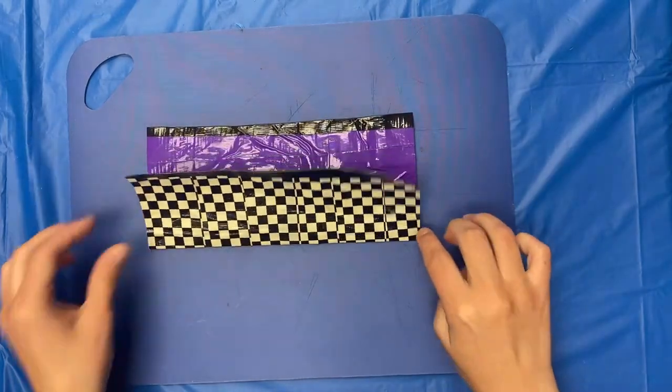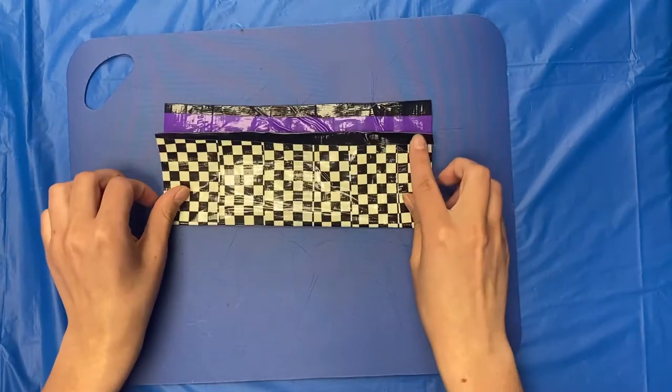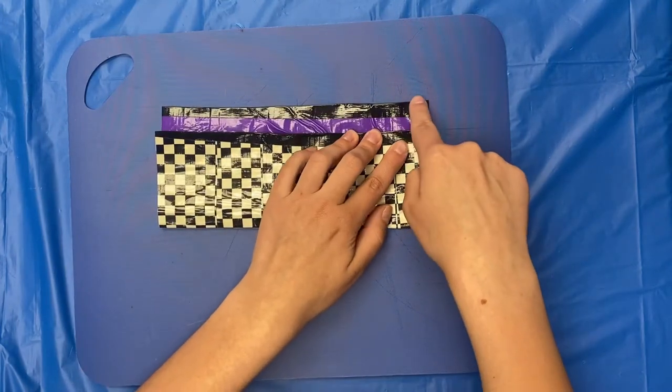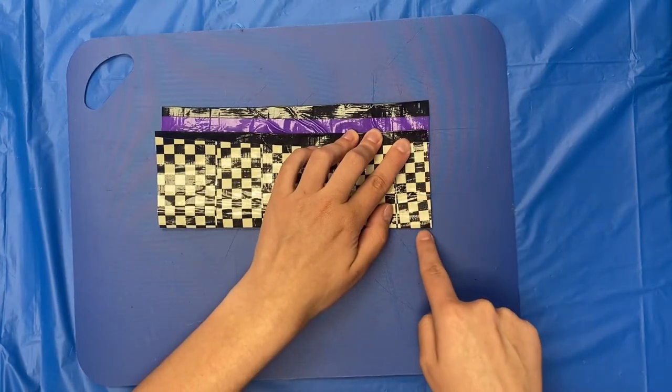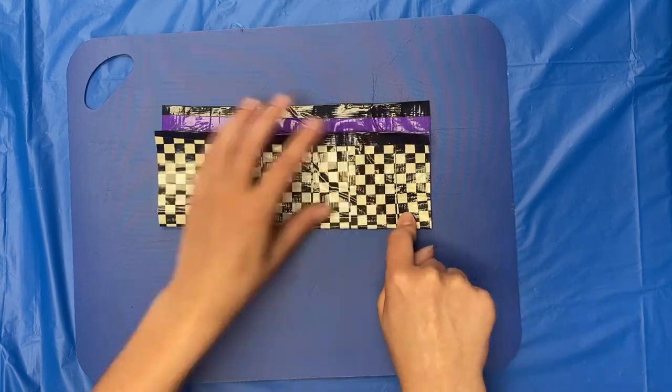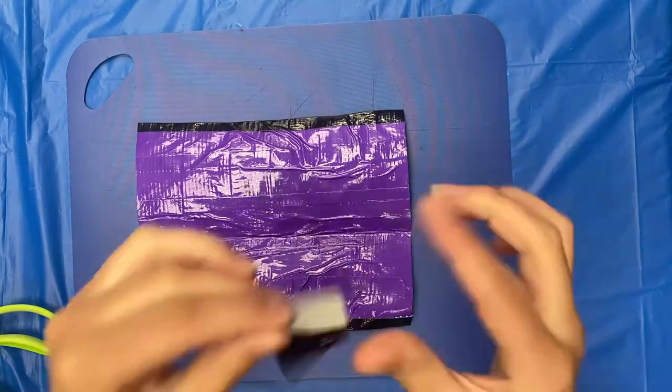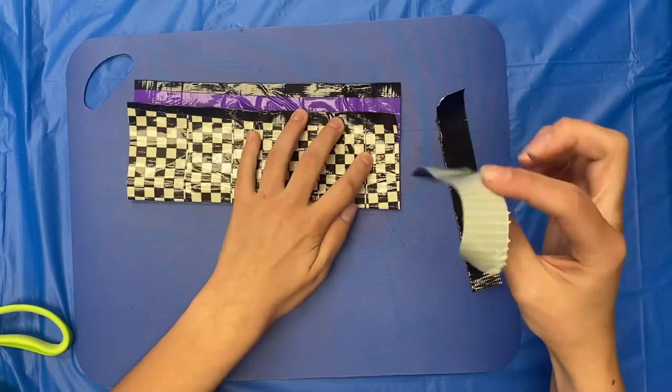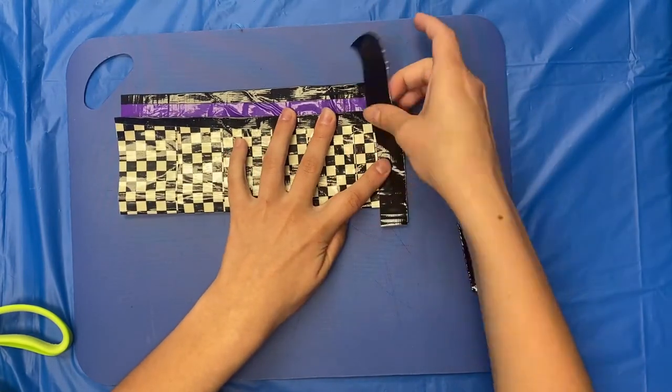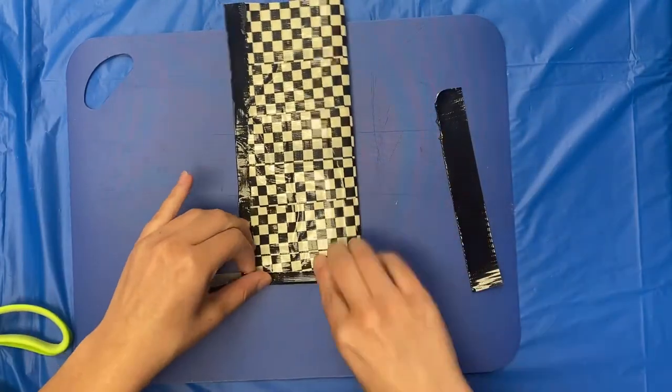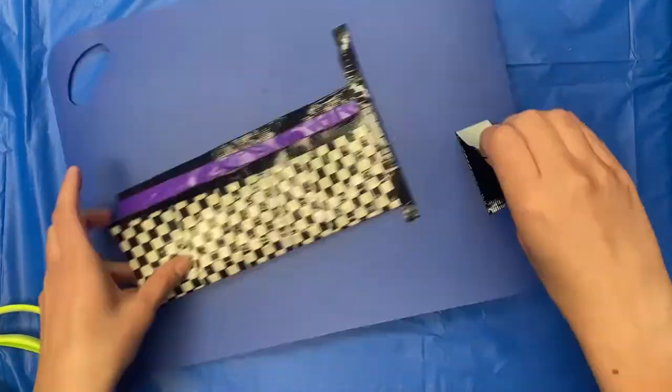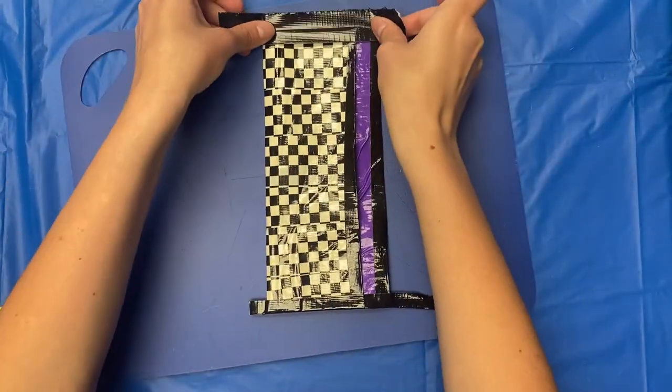Take your last color and cut a piece about the length of the short side and tear it in half. Place it on the outside and fold over. Do the same on the other side.